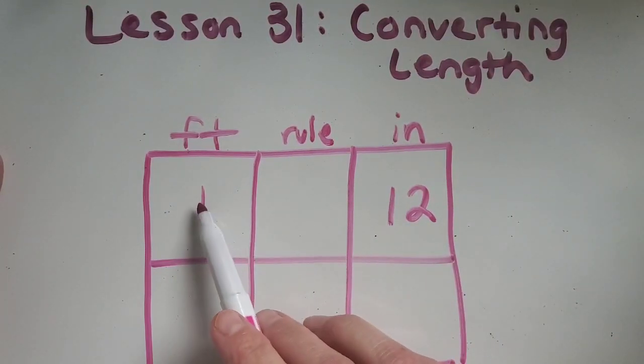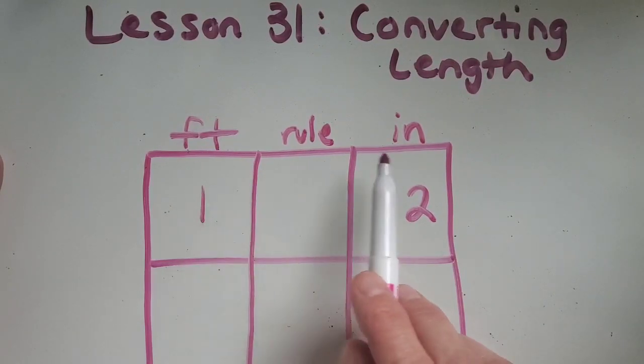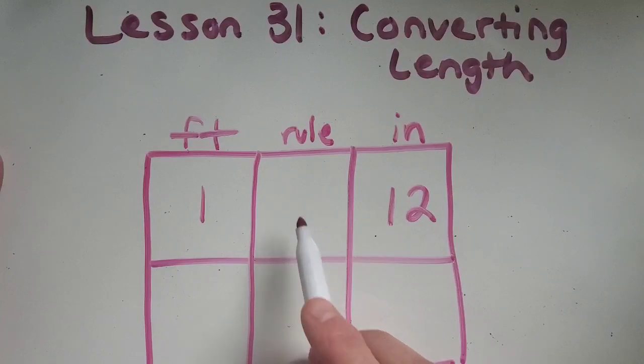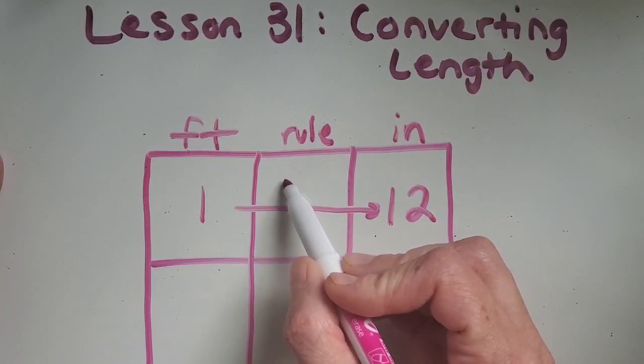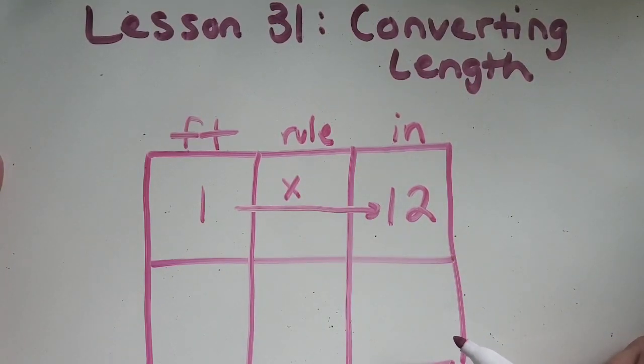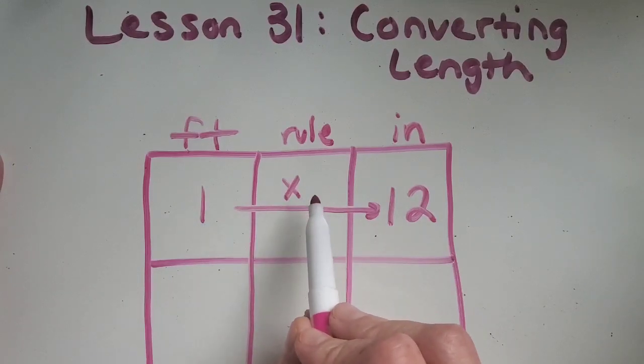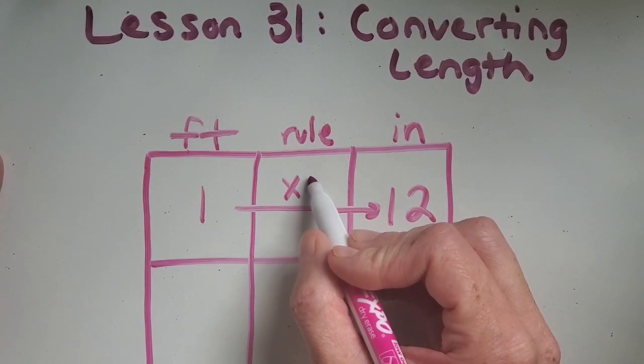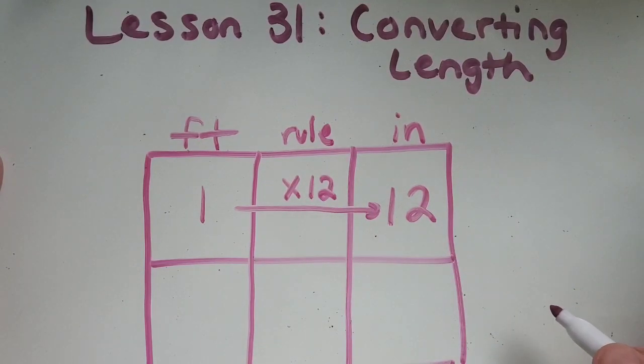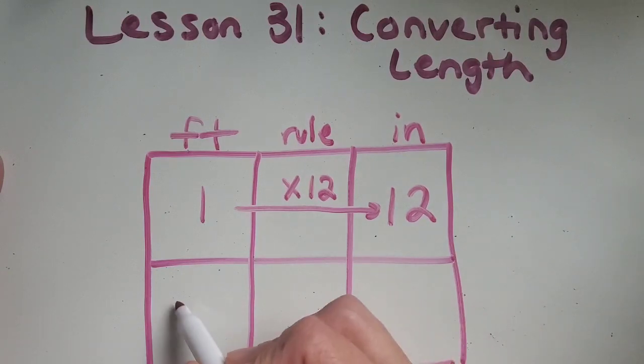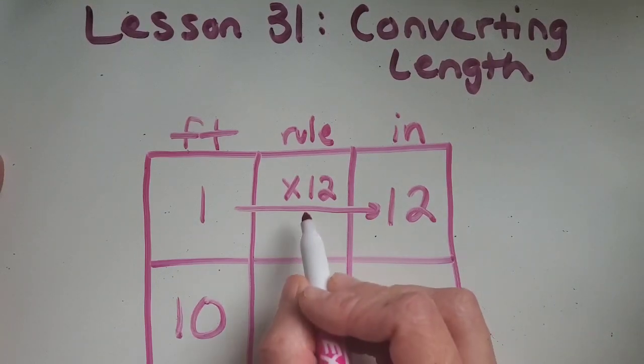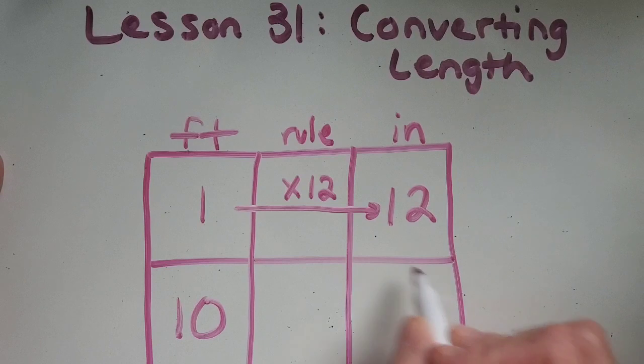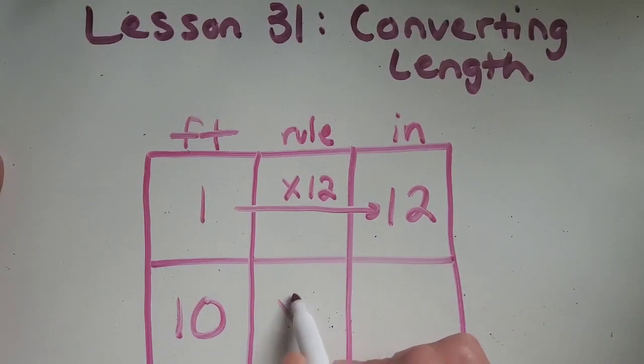Okay so then I think about how do I get from one foot to 12 inches? Is there a pattern that you can see that could get me from here to here? Okay so you might be thinking it could be a multiplying pattern and so 1 times what equals 12? 1 times 12 equals 12. So that means if I'm wanting to look at this 10 foot basketball hoop then I can use that same rule to find out the mystery of the inches. I can use times 12.